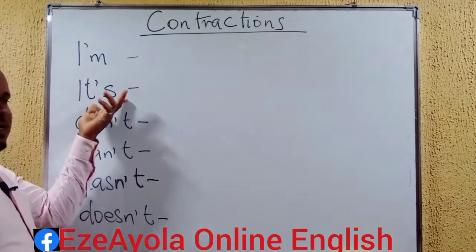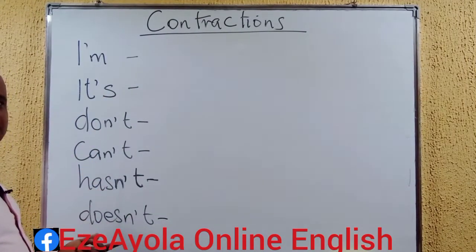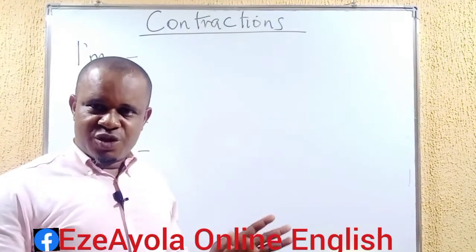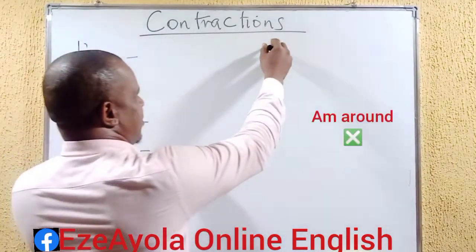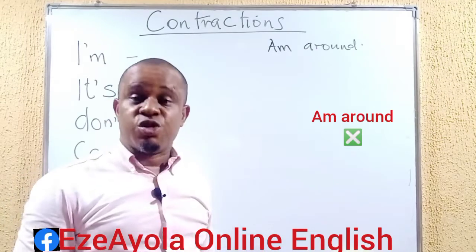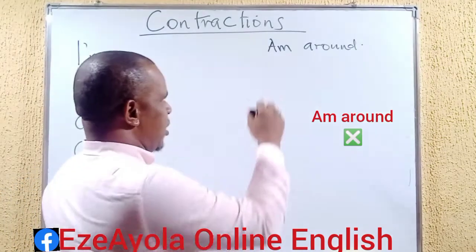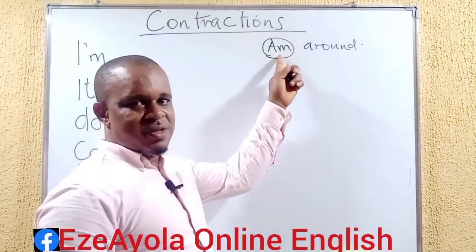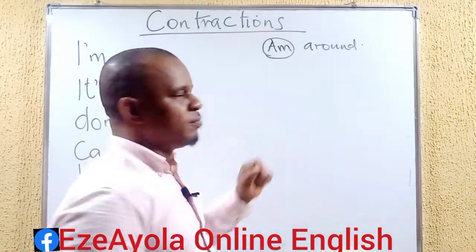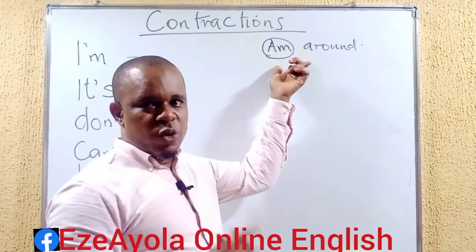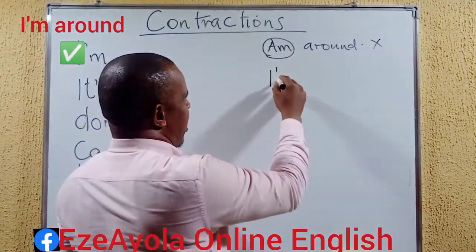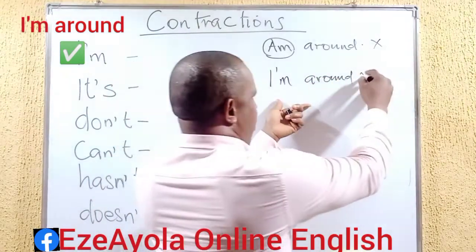The first is 'am', then 'it's', 'don't', 'can't', 'hasn't', 'doesn't'. When we say 'am' — you may have noticed many times people speak and say 'I'm around.' Of course, it's not wrong to say 'I'm around', but it is wrong to write it starting with just 'am'. It's wrong to begin a sentence with 'am' alone. What they say is correct, but the manner in which it is written — that's where it is wrong.